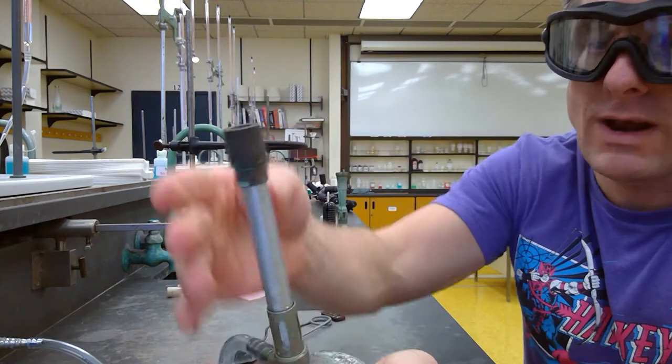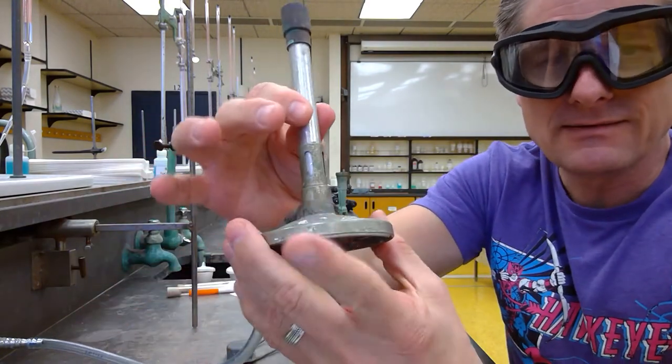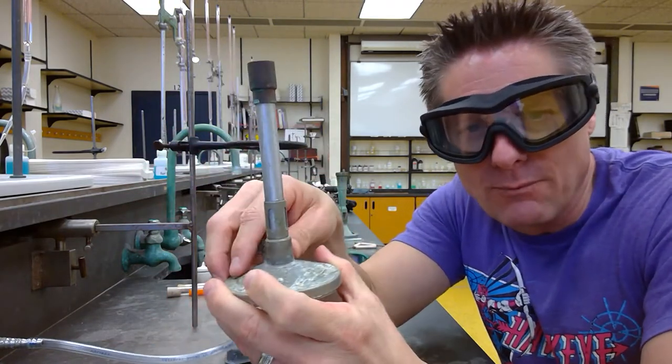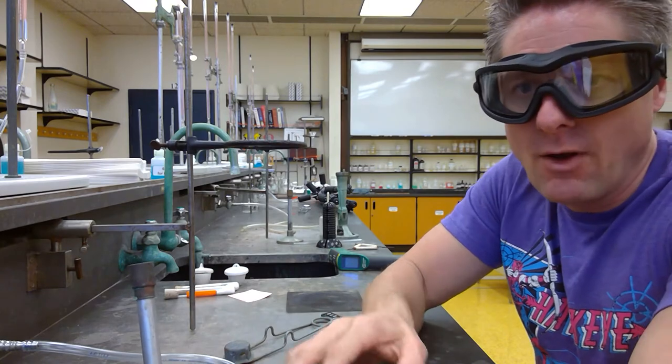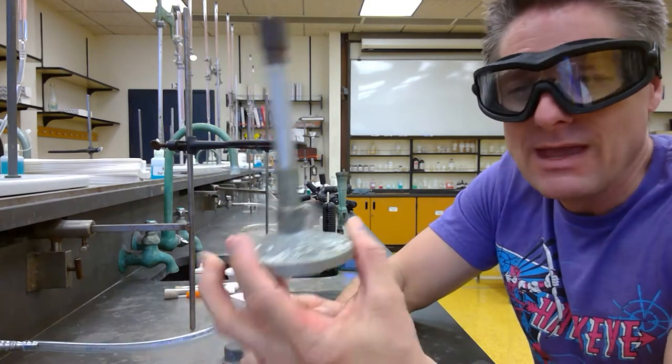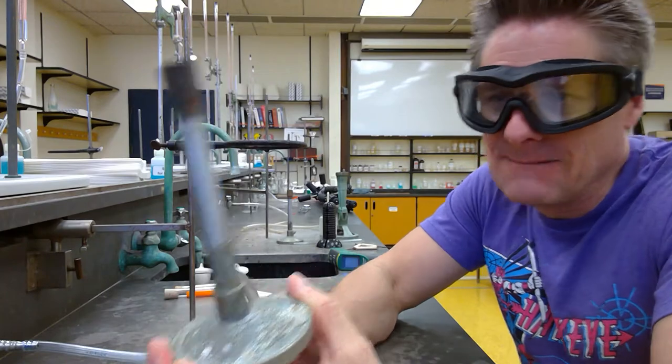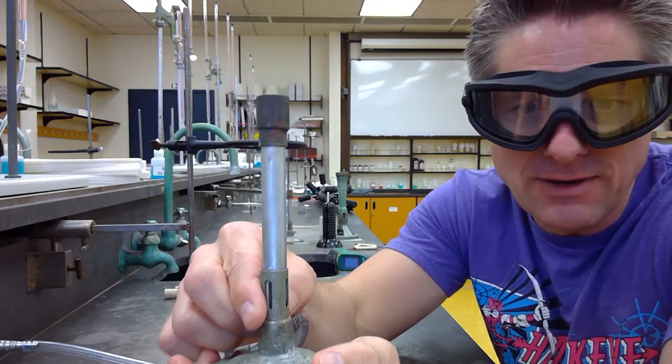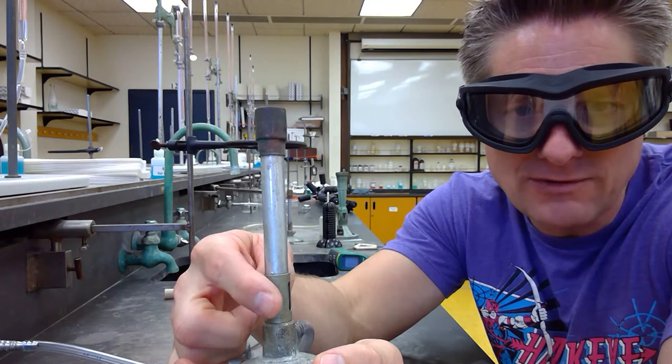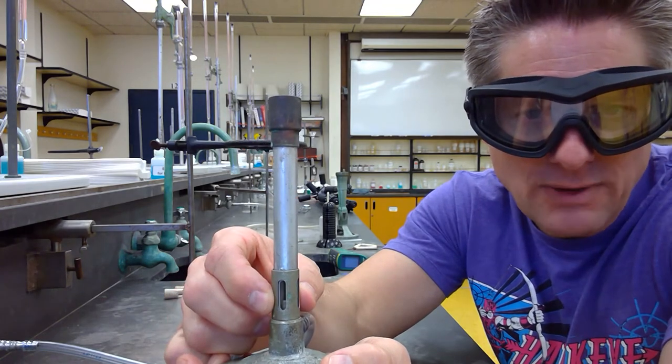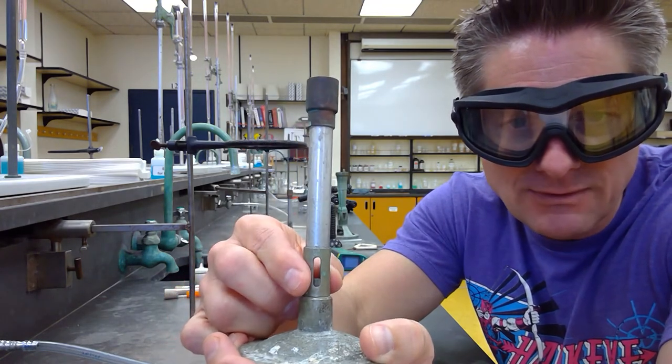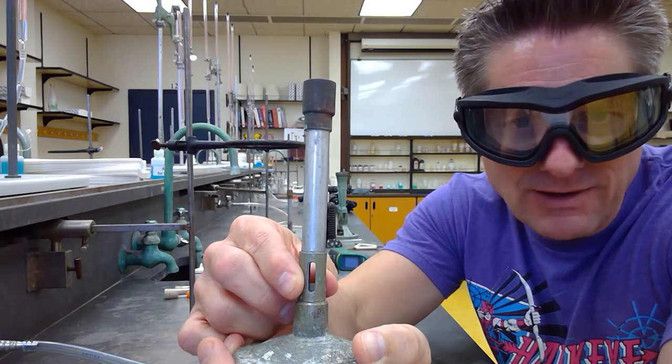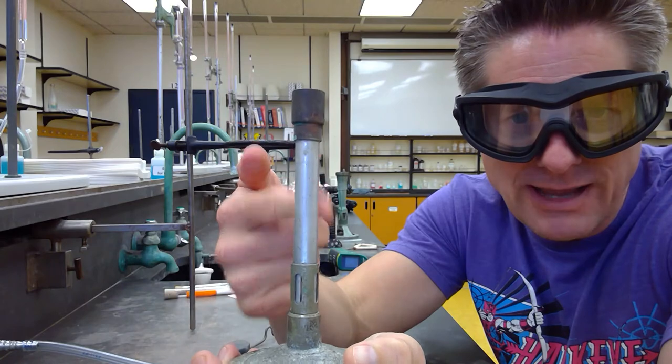We have a couple parts here. What I'm grabbing is called the barrel. This is the base. If you're ever moving a Bunsen burner, always pick it up from the base. The flame comes out of the top, and air comes in through these entrance ports. This controls how much air—maximum air versus minimum air. That creates different kinds of flames.